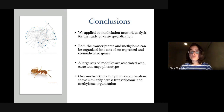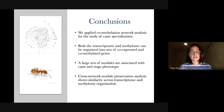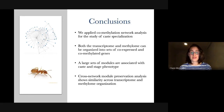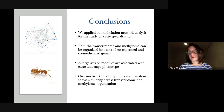Co-methylation network analysis has been used in a lot of other fields, but not much in ecology and evolution. We could see that plenty of genes could be organized into sets of co-expressed or co-methylated genes associated with both caste and life stage phenotypes. We also found similarities across the transcriptome and methylome organization. Co-methylation networks are a great starting point for deeper understanding of the complex interaction between gene expression and DNA methylation, and hopefully phenotypic plasticity.